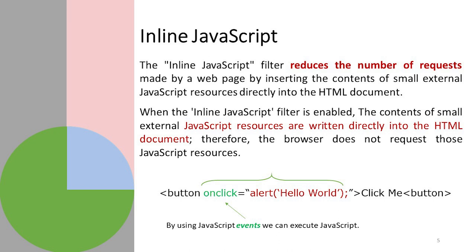There is no need to call external resources. Just like there is a button — the green code 'onclick' is an event used to call JavaScript, such as 'alert("Hello World")'. So with this code, if you click a button, it will show an alert dialog saying Hello World. By using JavaScript events we can execute JavaScript. The most important aspect is that events like onclick, onblur, mouse events, keyboard events, or load events are used to execute JavaScript.